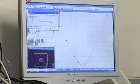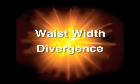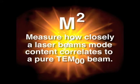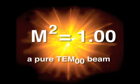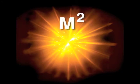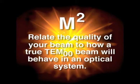Two of these values, waist width and divergence, can be used to calculate m squared, the measurement indicating how closely a laser beam's mode content correlates to a pure TEM00 beam. A laser with only TEM00 mode content has an m squared value equal to 1.00. The m squared measurement allows the user to relate the quality of their beam to how a true TEM00 beam would behave in an optical system.